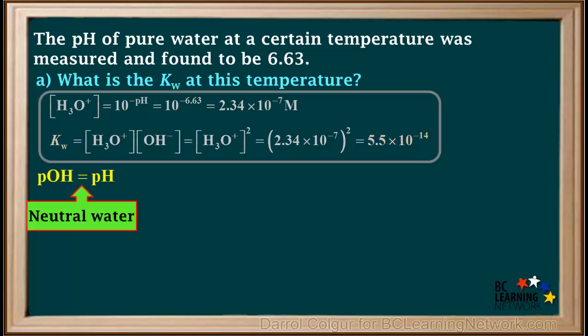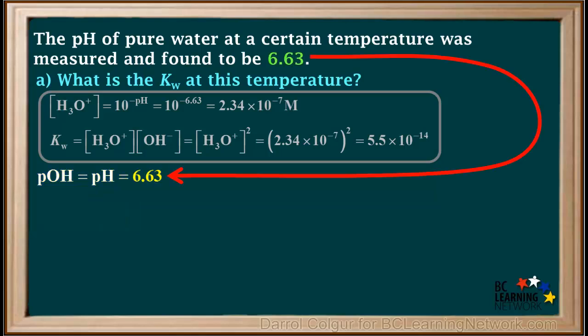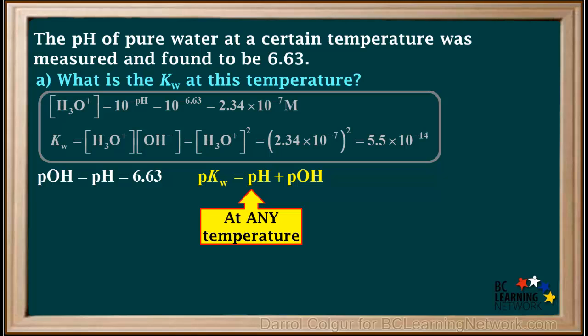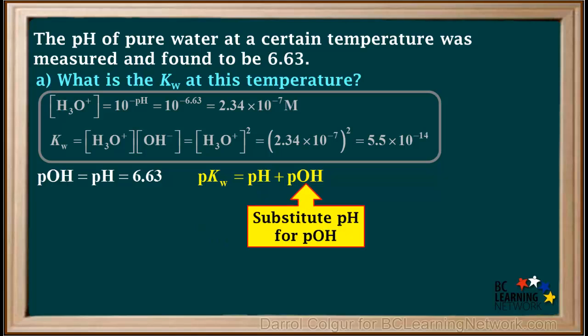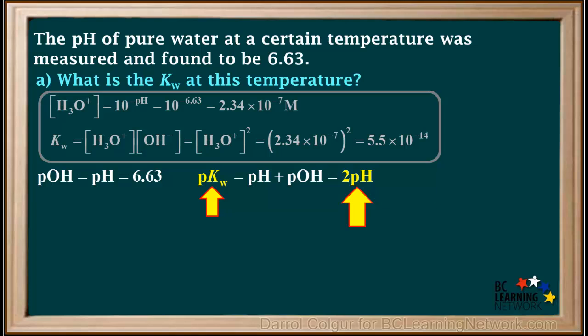Using the second method, we start with the fact that we have neutral water, so the pOH is equal to the pH, which is equal to 6.63. Remember that at any temperature, pKw is pH plus pOH. Because pOH is equal to pH, we can substitute pH in for pOH. So pKw is equal to 2 times the pH, which is 2 times 6.63, or 13.26.